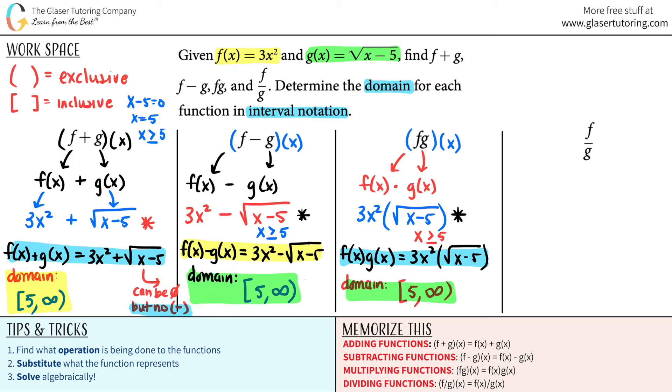Last but not least, division. F divided by g of x, which is the same thing as saying f of x divided by g of x. Clearly know what f of x is. Clearly know what g of x is. So let's just plug it in. F of x on top is the three x squared all over the g of x, which is rad x minus five. Now we have two concepts here. I have a rad and I have a denominator.